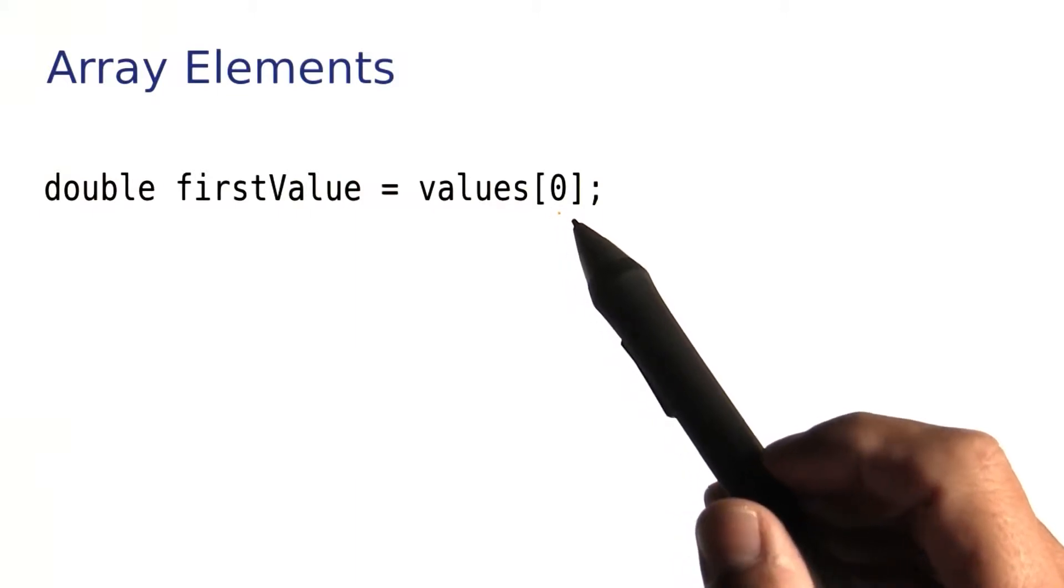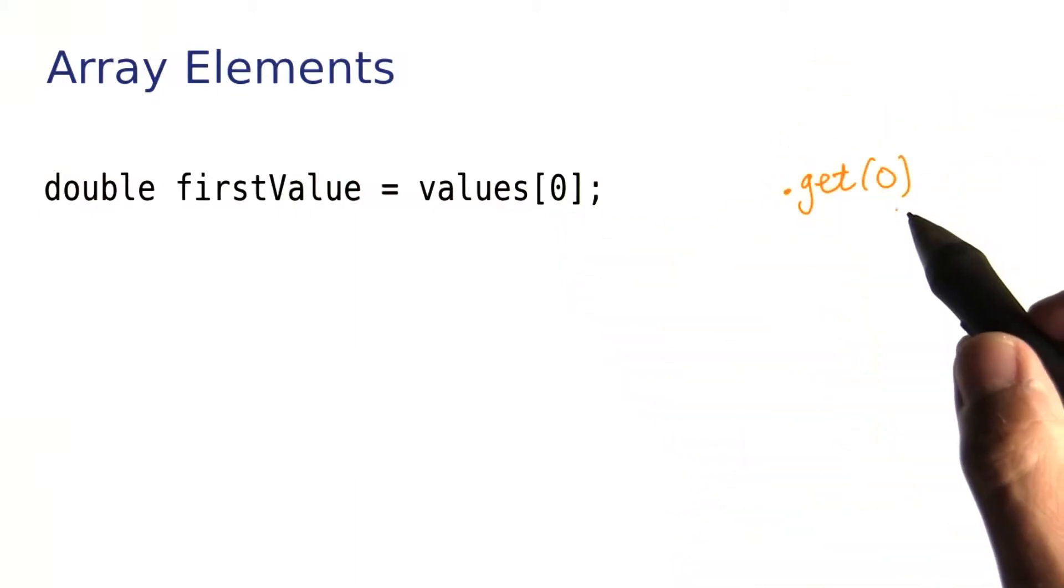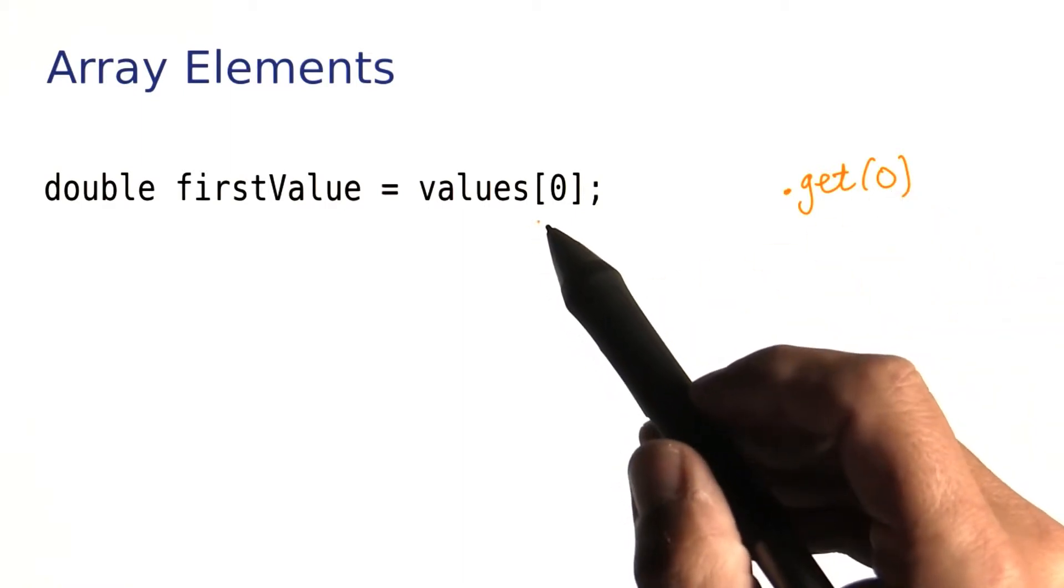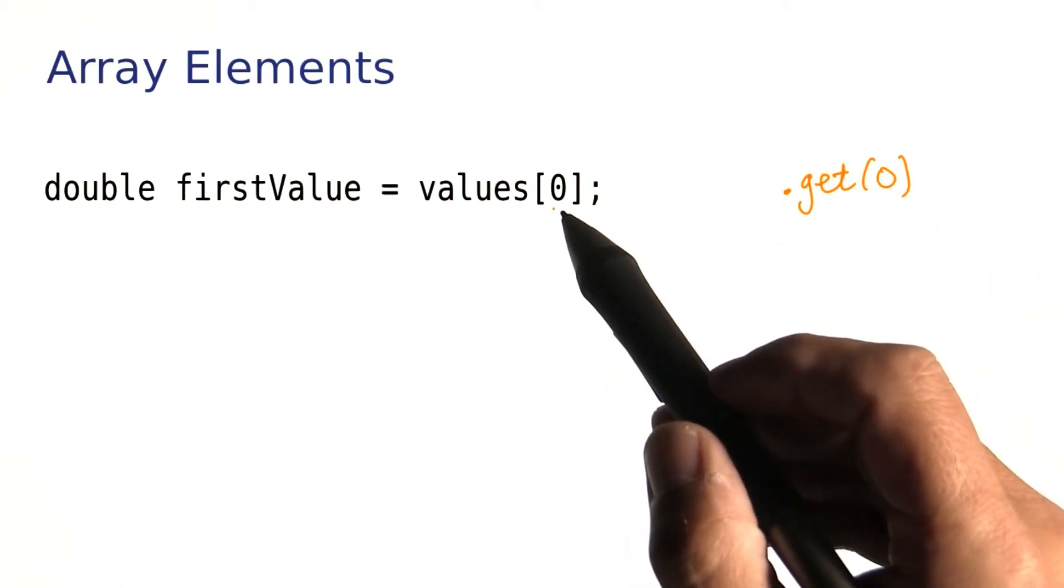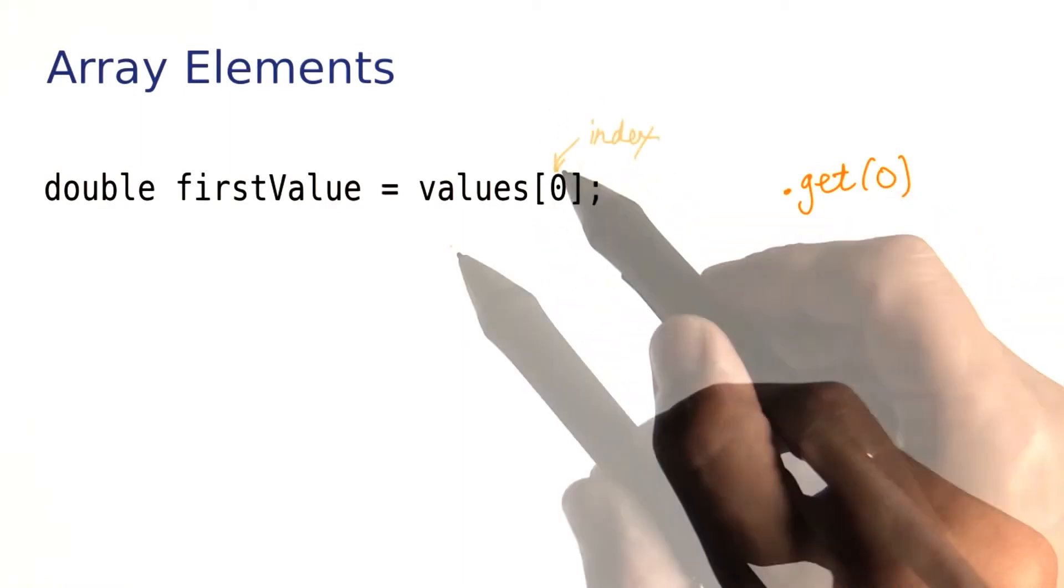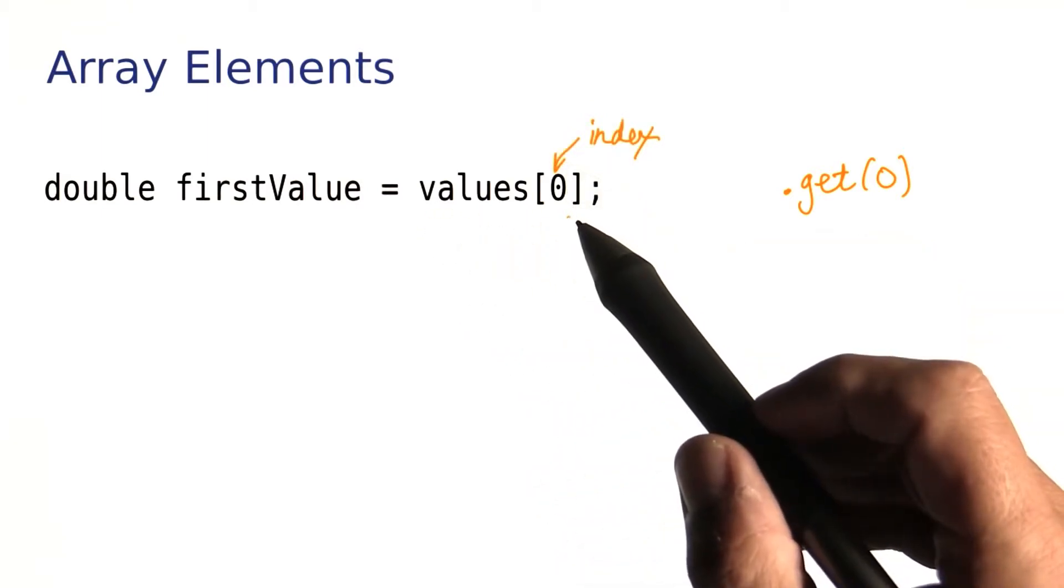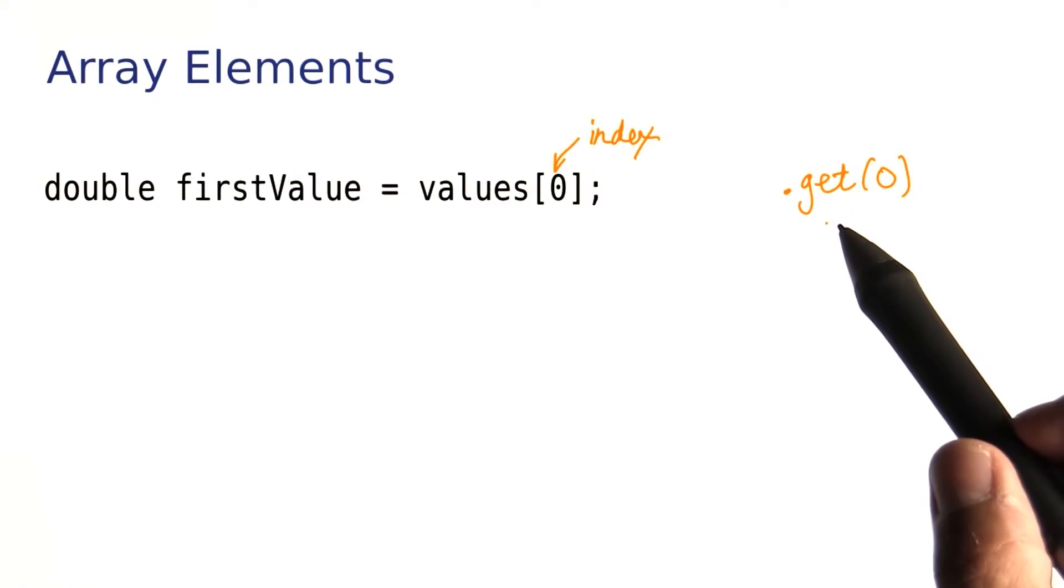Remember, with an array list, we would have called dot get. But with an array, you use the brackets, and you put the index inside. The values bracket zero is the equivalent of calling values dot get zero.